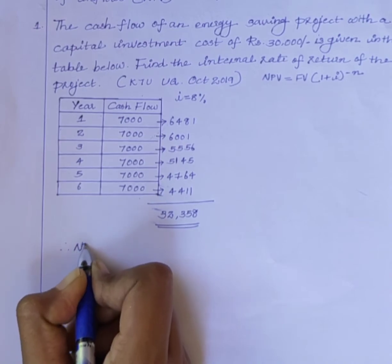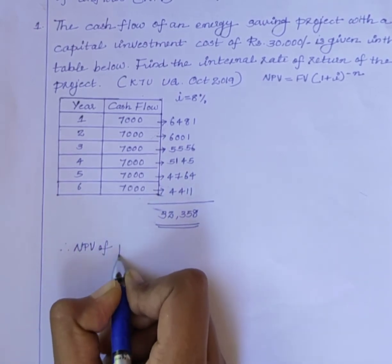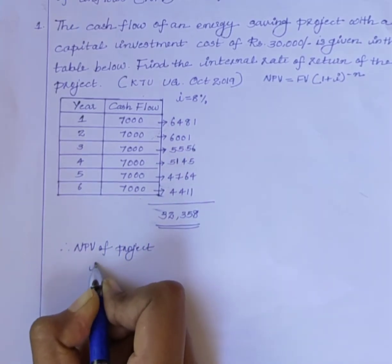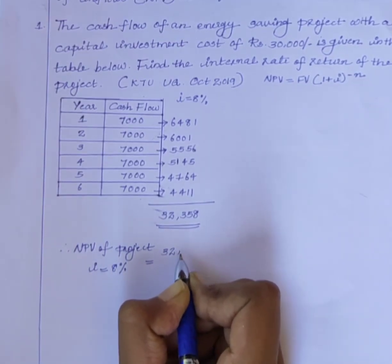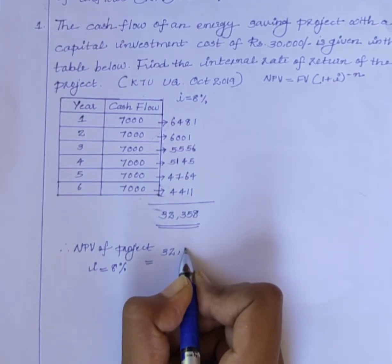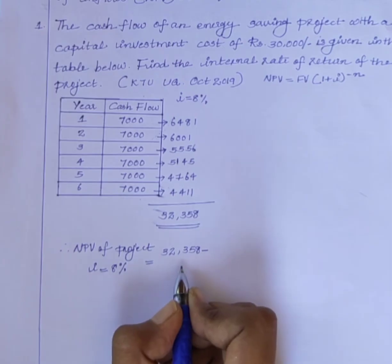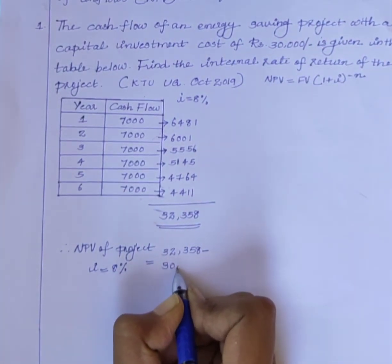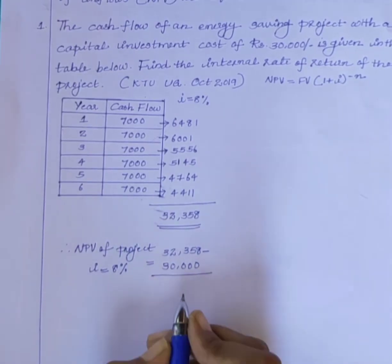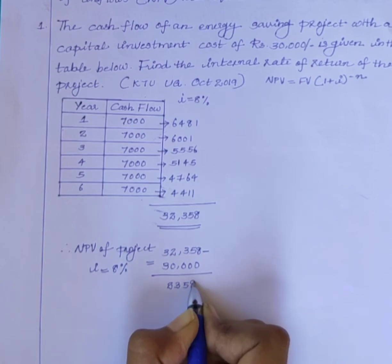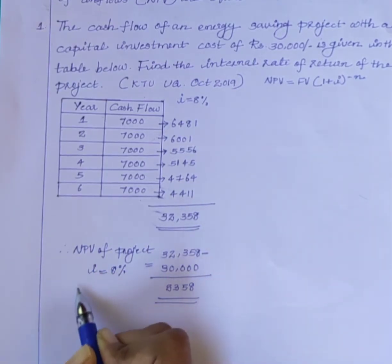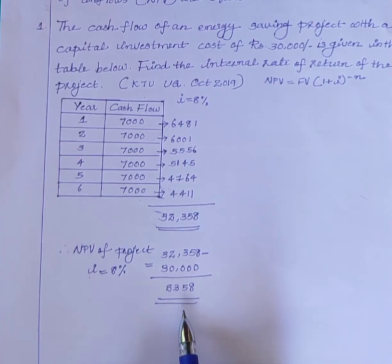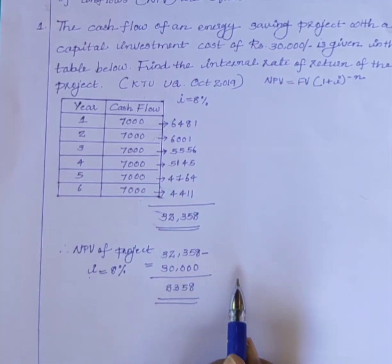Therefore, the net present value of the project with an internal rate of return of 8% is: sum of present values 32,358 minus capital investment cost 30,000 equals 2,358. But in the case of the internal rate of return method, the rate of return must be such that the net present value of the project becomes 0. Here it is not 0 — it is a positive value. So we have to assume another internal rate of return.